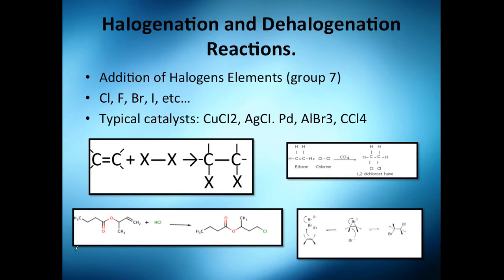Last but not least, we're going to analyze halogenation reactions. Halogenation is done by adding halogen elements from group 7 on your periodic table: chlorine, bromide, iodine, and fluorine as well.